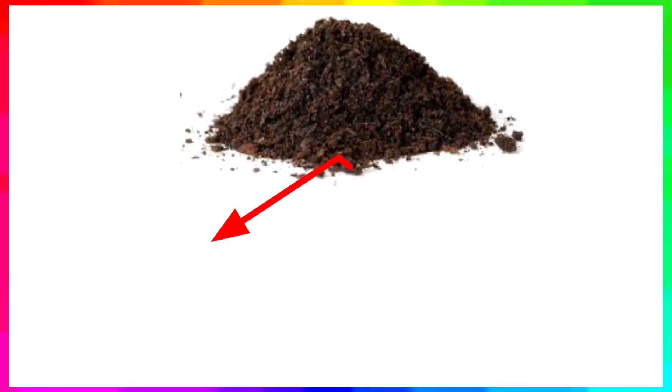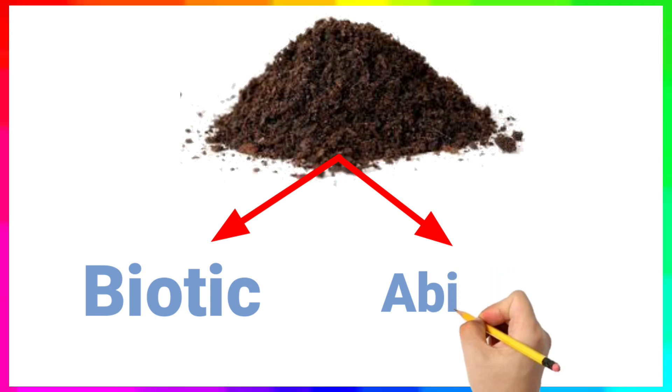Soil is composed of both biotic, that means living things like plants and insects, and abiotic materials, that is non-living things like minerals, water, and air.